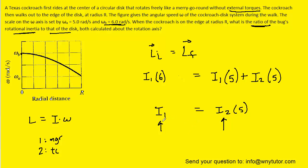And then we can divide both sides by 5. And when we do that, we can see that the ratio of the cockroach's rotational inertia to that of the disk is equal to 0.2. And this is the correct answer to the question.